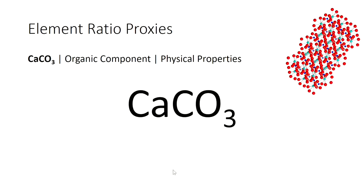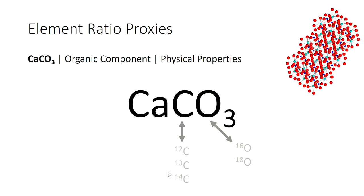We've got this skeleton that's composed of calcium carbonate, and we've already been talking about how we can use changes in the oxygen isotopes preserved in that to tell us about temperature and salinity, and how we can use the carbon isotopes in calcium carbonate to tell us about the metabolic conditions that the coral is experiencing. We can also look at the organic carbon component as well.